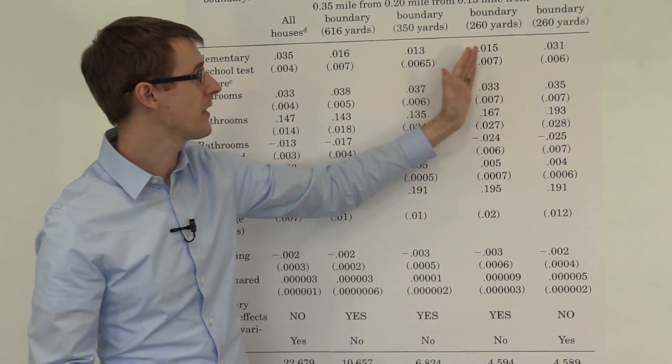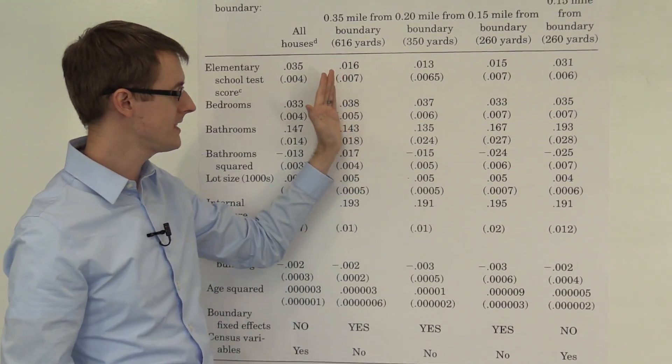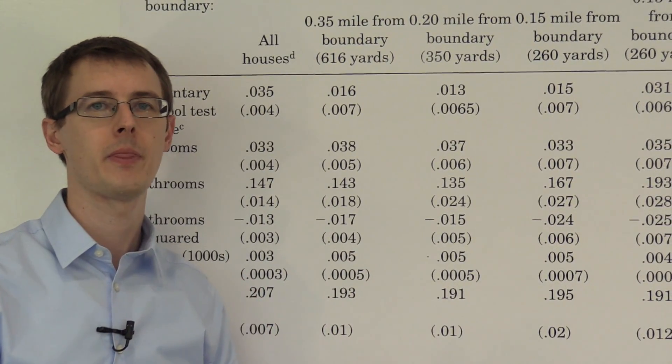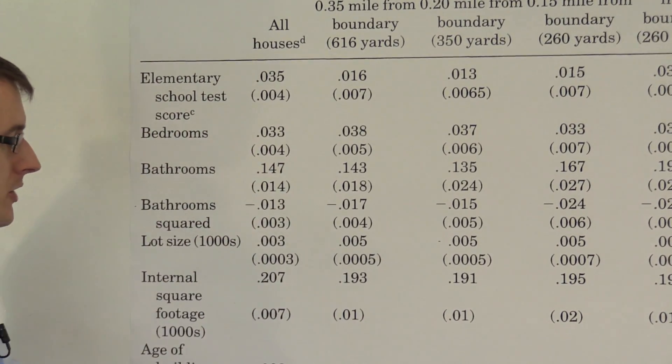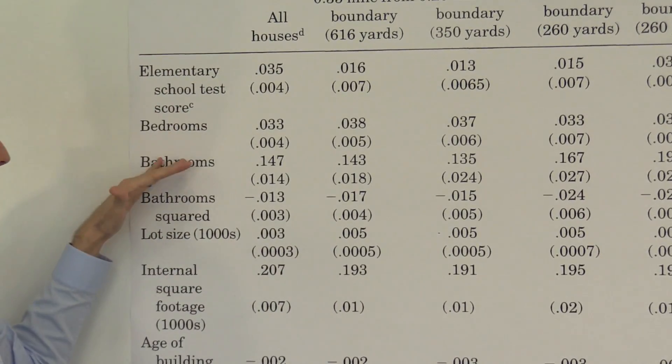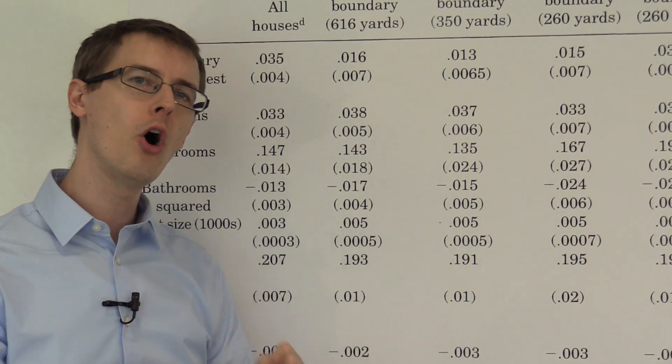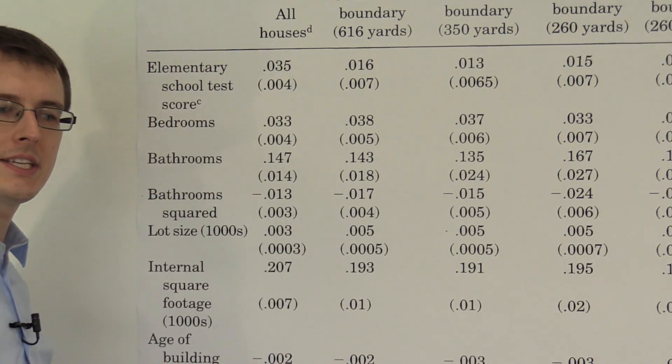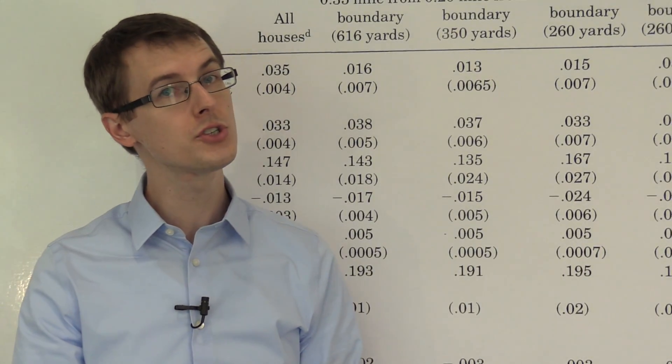So what are these regressions here doing? Well, they're basically saying let's look at only houses that are close to a boundary. Okay? Now because we've got all these controls, let's also just look at houses that all have the same number of bedrooms, bathrooms, etc. And so all we're doing is comparing houses that look very similar along these dimensions and are close to the boundary.